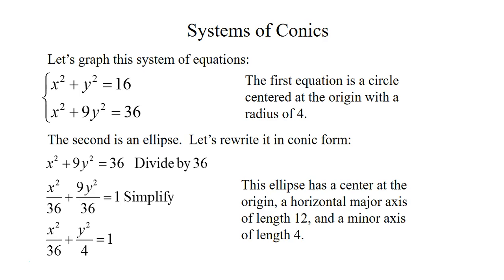This is an ellipse that's centered at the origin. The 36 is the a² value so a is 6, which means that we have a horizontal major axis and that horizontal major axis has a length of 12. And we also have a minor axis of length 4.